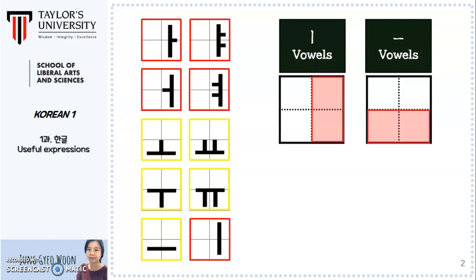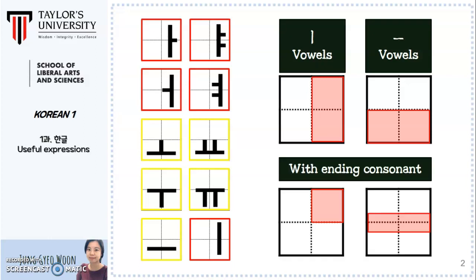In case there is an ending consonant, the initial consonant and the vowel must be shortened, and the ending consonant is written at the bottom of the syllabic unit. Therefore, you will need to consider the formation of the syllable and adjust the length and height of the letter flexibly.